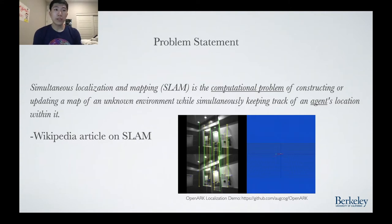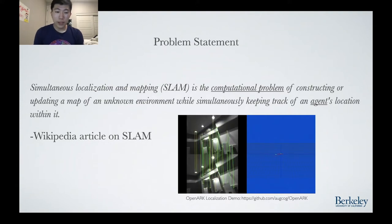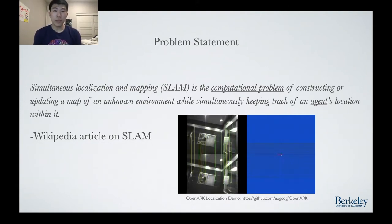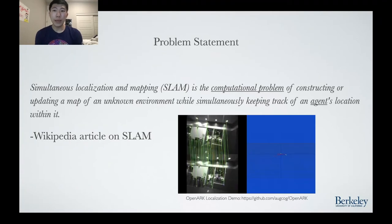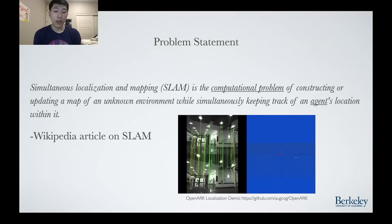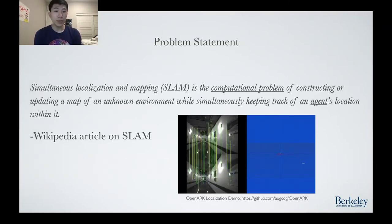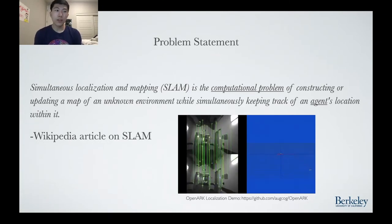Reading the first sentence from the Wikipedia article on SLAM: simultaneous localization and mapping is the computational problem of constructing or updating a map of an unknown environment while simultaneously keeping track of an agent's location within it. The GIF on this slide illustrates an example of visual SLAM, which uses RGB and depth images from a video feed to track a camera's 6 degrees of freedom pose over time. These 6 degrees of freedom refer to XYZ position, pitch, roll, and yaw rotation.